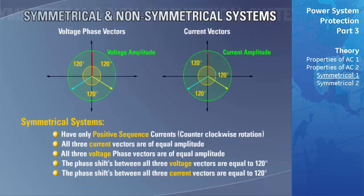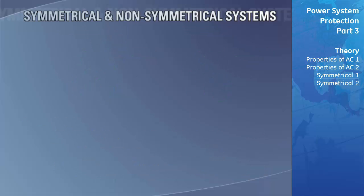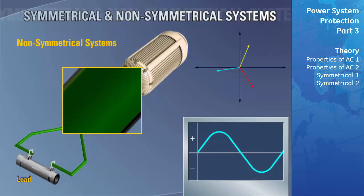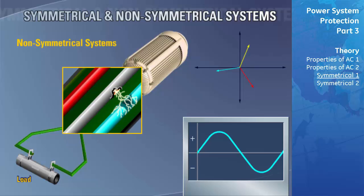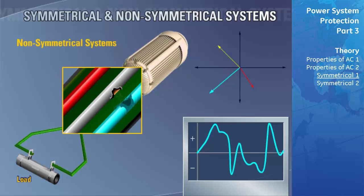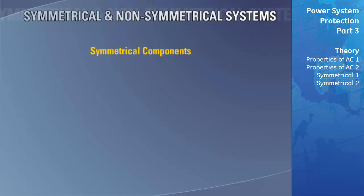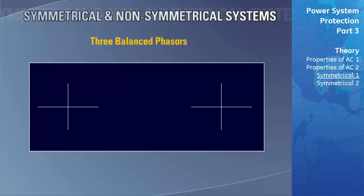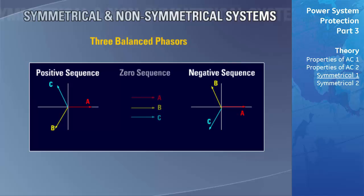If one or more of these conditions is not met, the system is said to be non-symmetrical or unbalanced. Under normal operating conditions, an electrical power system is considered symmetrical from the generator to the load. When a fault or unbalanced condition occurs — such as a phase-to-ground or open conductor fault — the system is said to be unbalanced. Symmetrical components is a methodology developed in 1913 by Charles L. Fortescue, allowing the line-to-neutral or line-to-ground voltage and current phasors of a non-symmetrical system to be calculated.